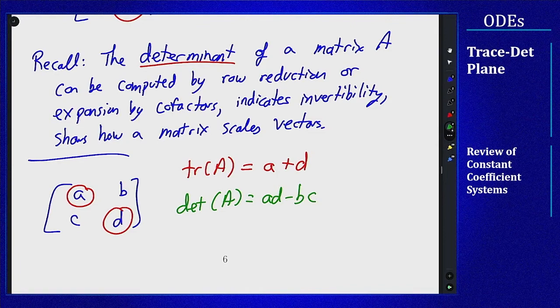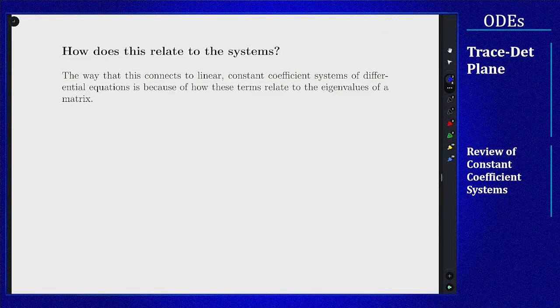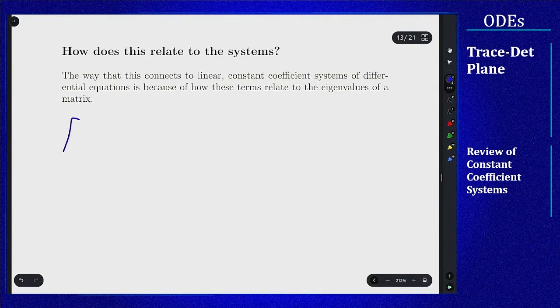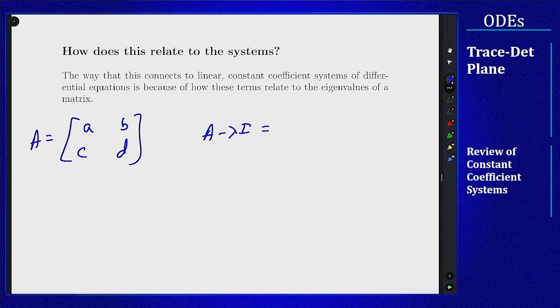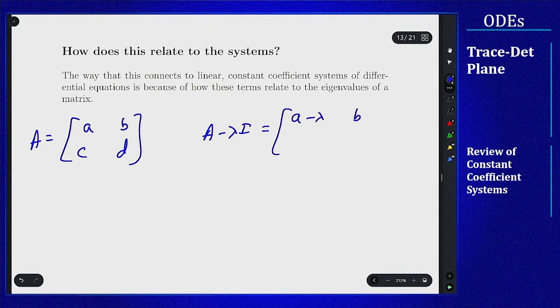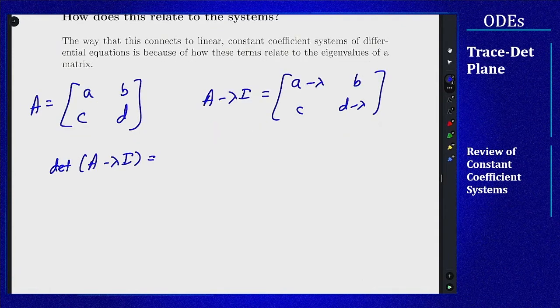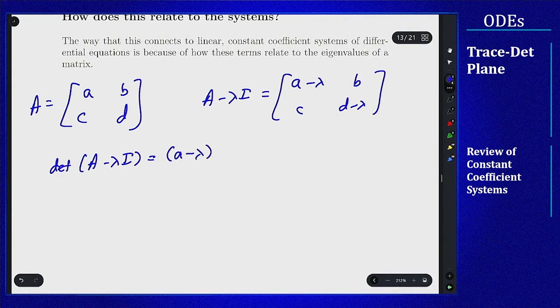All right, hang on to those for a second, we'll come back. How does this relate? Well let's take that same general matrix and look to find the eigenvalues. So if I have my general matrix A, B, C, and D, and I'm going to call this matrix A, then A minus lambda I, I subtract lambda off the diagonal. A minus lambda, B, C, D minus lambda, and I can find this determinant. And if I do that I will get A minus lambda, D minus lambda, minus BC.